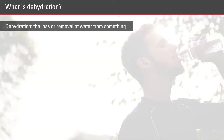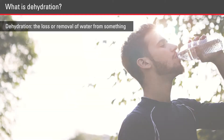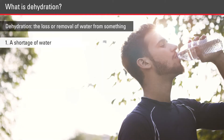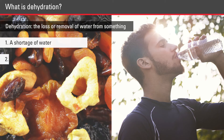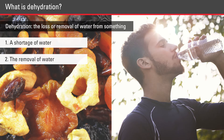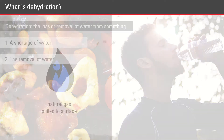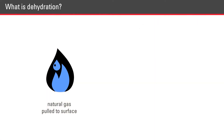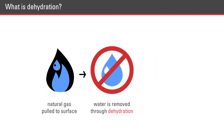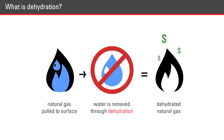What is dehydration? You may think of physical dehydration where your body has a shortage of water, or it may remind you of dehydrated fruit or meat that has had the water removed. In natural gas dehydration it is the same idea. Producers dehydrate gas by removing the water from it.